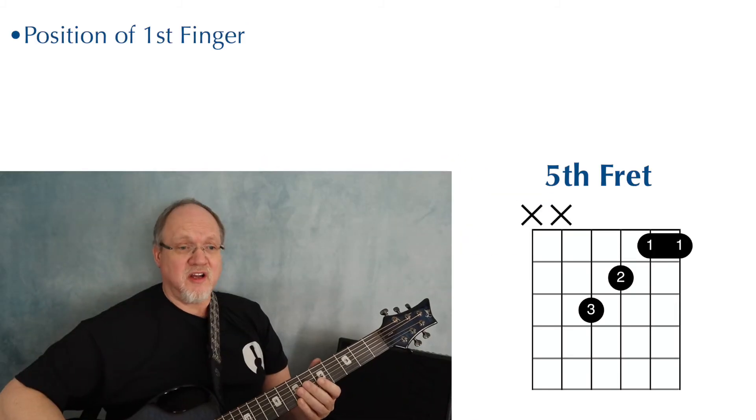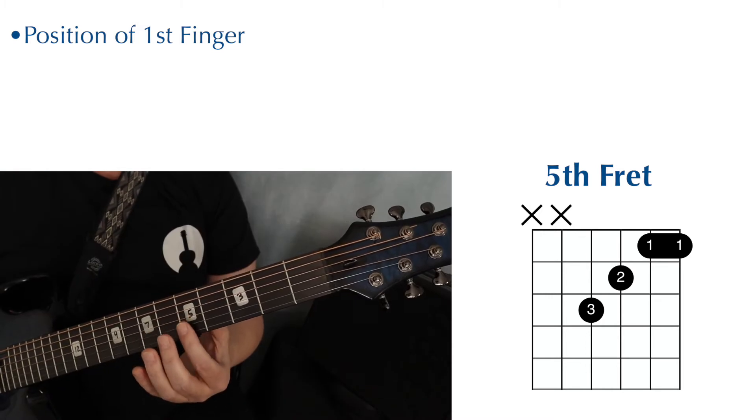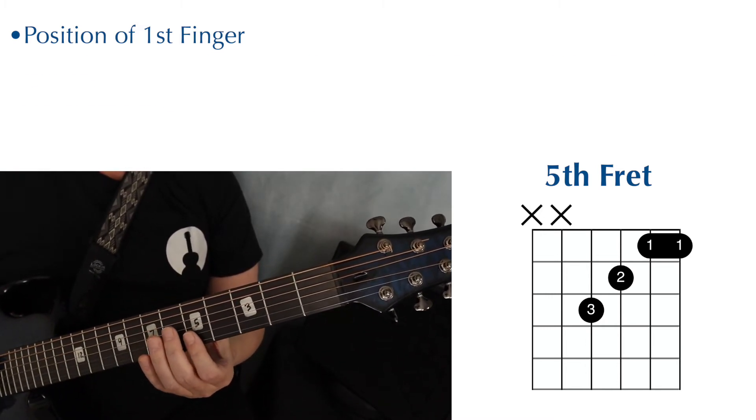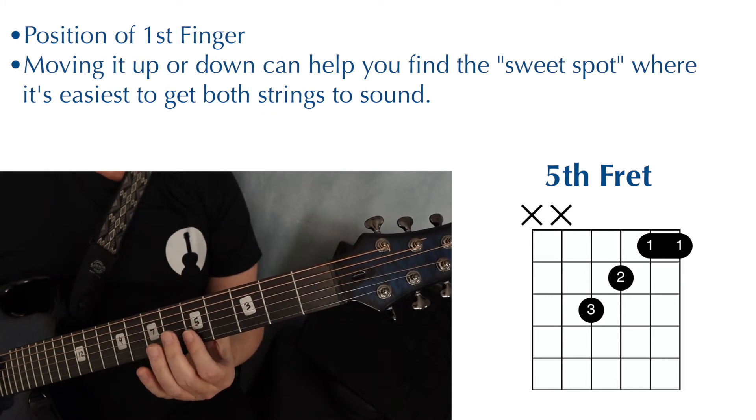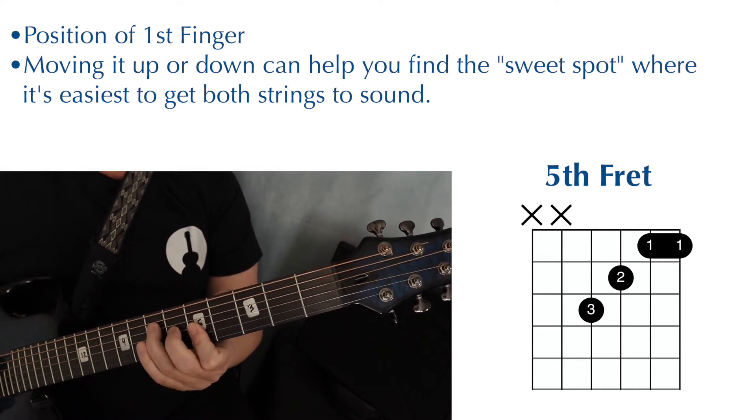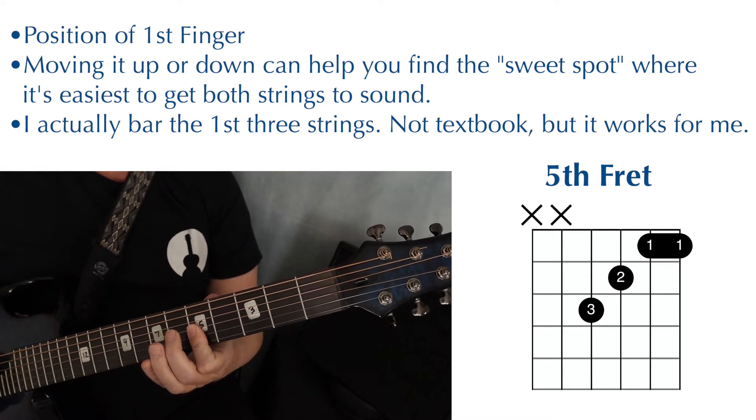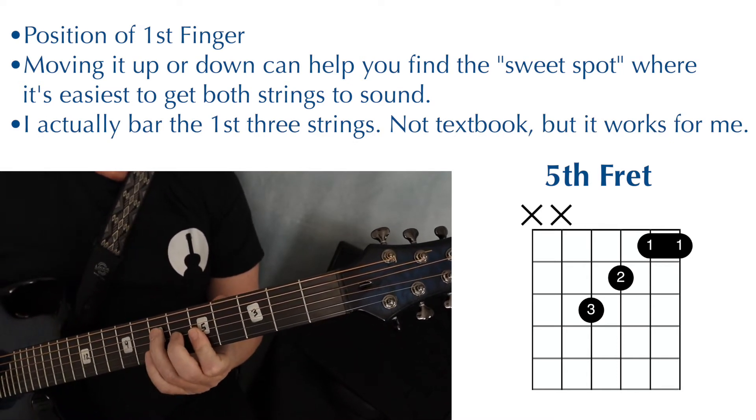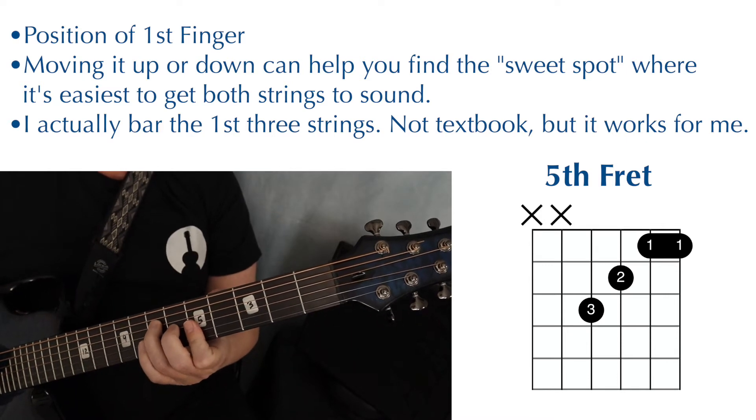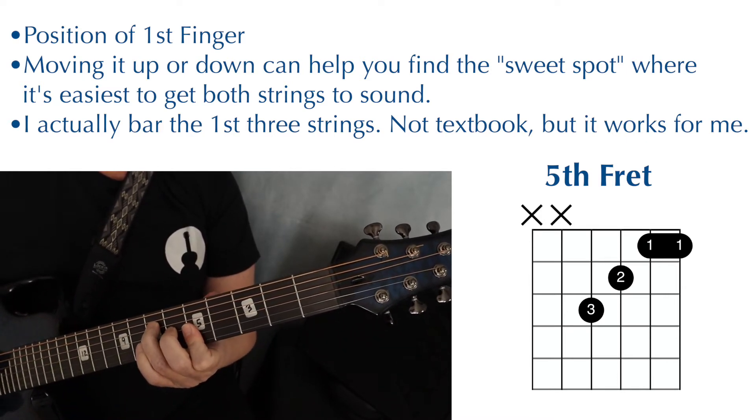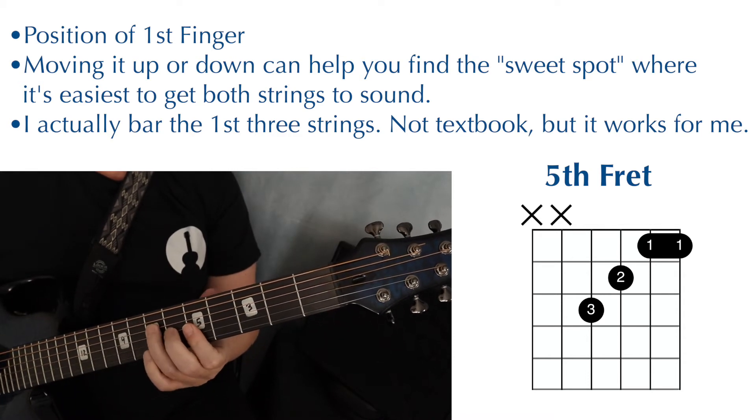The first thing I want to talk about is the position of your first finger, the one that's doing the barring. Try moving it slightly up or slightly down. And you may notice that when I'm playing the F chord, I'm actually playing three strings. That may seem counterintuitive, but just for me personally, that puts my fingers in just the right position to get all the notes I need from that F chord.